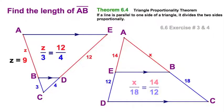Let's look over here. I've got x is to 18, that's over here, as 14 is to 12. And again, we just solve that, and our missing side is 21.